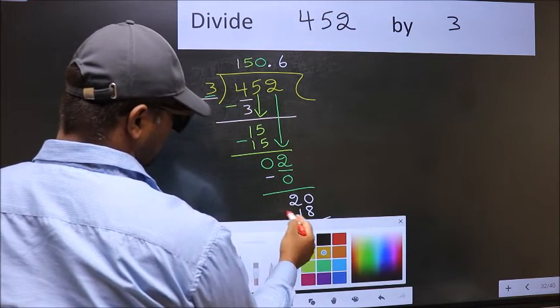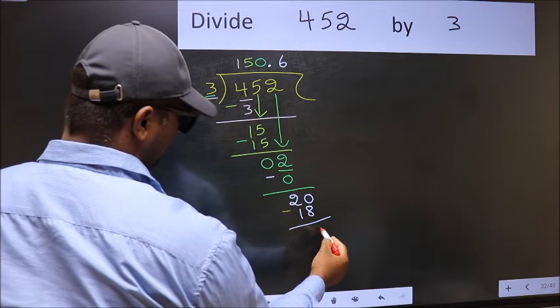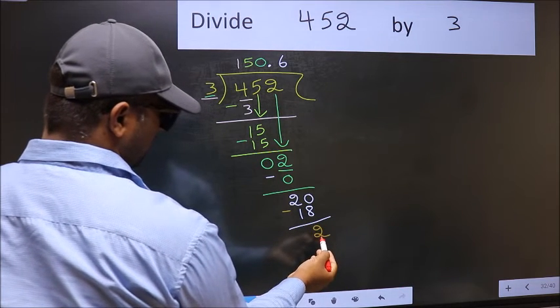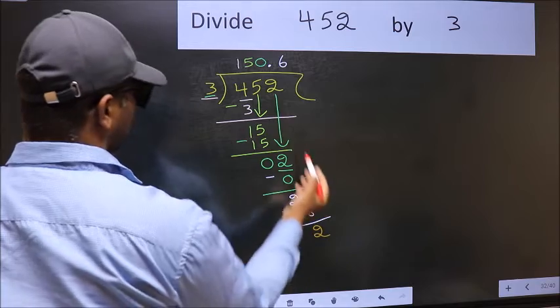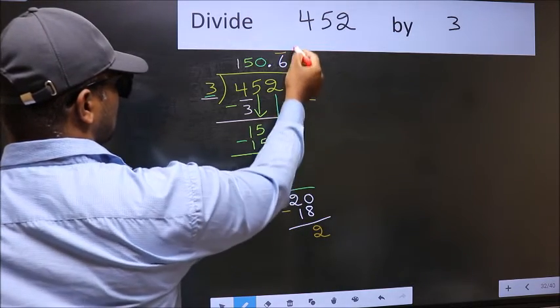Now you should subtract that. 20 minus 18, 2. We got 2 again. That means we get a bar on this number. So this is our quotient.